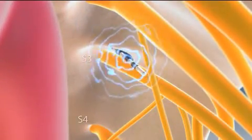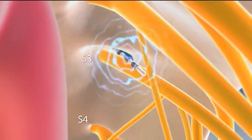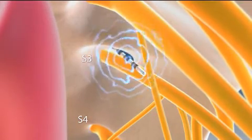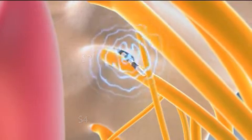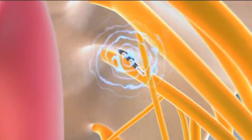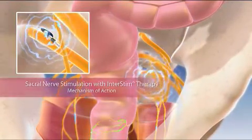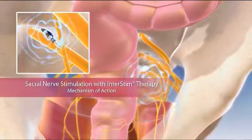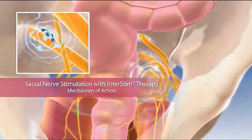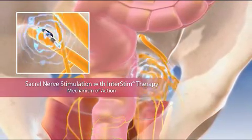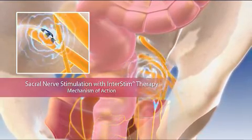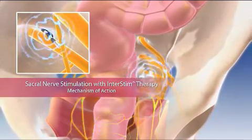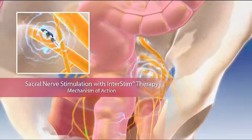The third and fourth sacral nerves are mixed nerves, containing voluntary somatic, sensory, and autonomic motor nerves, both afferent and efferent, any or all of which may contribute to the clinical effect of sacral nerve stimulation. Although the precise mechanism of action for sacral nerve stimulation remains unclear at this time, substantial evidence from clinical studies, including randomized controlled trials, demonstrate that InterStim therapy greatly improves continence and quality of life.